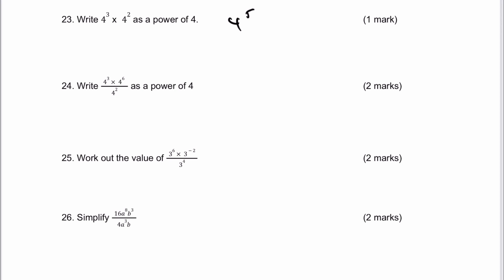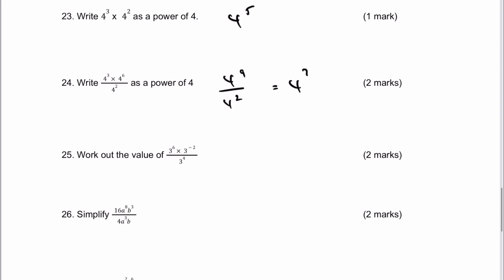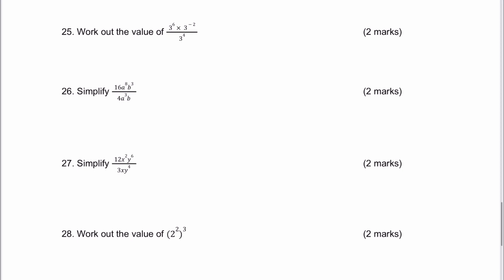Number 24: 4 to the 3 times 4 to the 6 is 4 to the 9, divided by 4 to the 2 — subtracting the index gives 4 to the 7. Number 25: 3 to the 6 times 3 to the minus 2 — 6 plus minus 2 is 4, so 3 to the 4, all divided by 3 to the 4 again. That's going to be 1, the same as the question we did before.